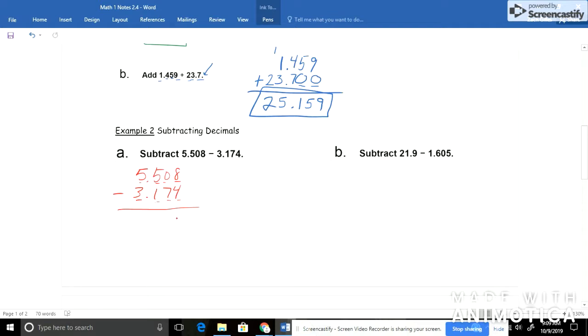8 minus 4 would be 4. 0 minus 7 I can't do. I'd borrow. Make this a 4. Make this 10. 10 minus 7 is 3. 4 minus 1 is 3. Bring my decimals straight down. And 5 minus 3 would be 2. So I'd come up with 2.334.